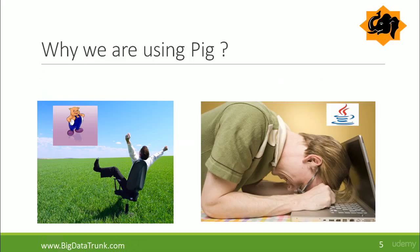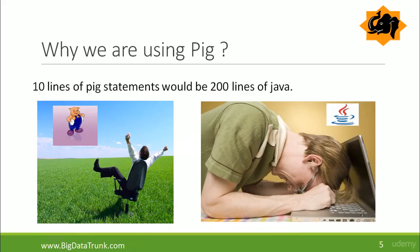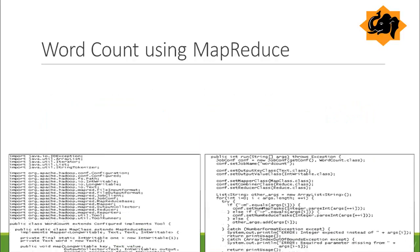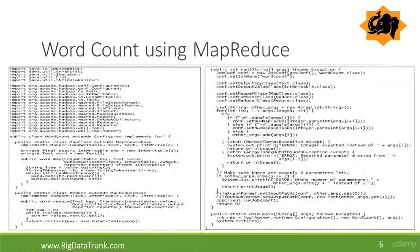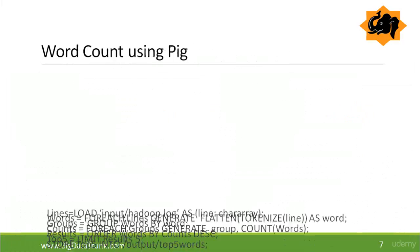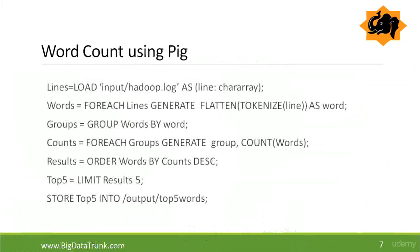So why are we using Pig? Simple reason: 10 lines of Pig statements could be 200 lines of Java code. So why not use Pig? Pig is an obvious choice over MapReduce. If you see a word count program using MapReduce you can see hundreds of lines, but when you go for Pig that just covers it in 10 statements.